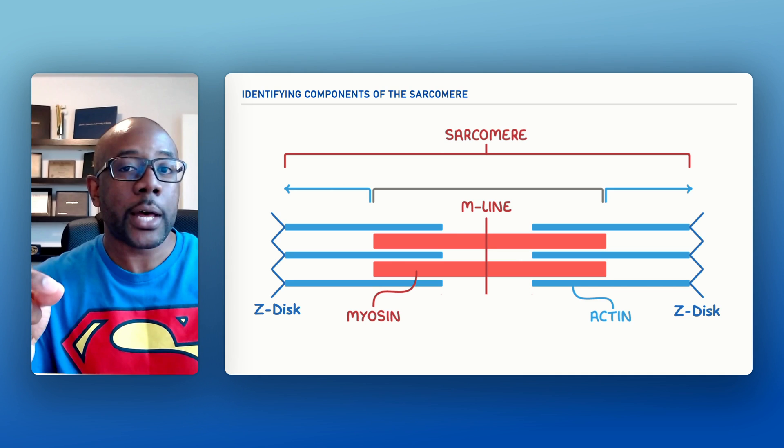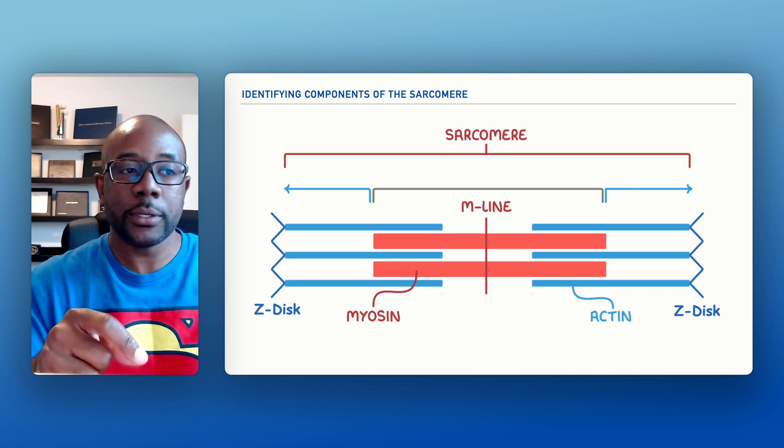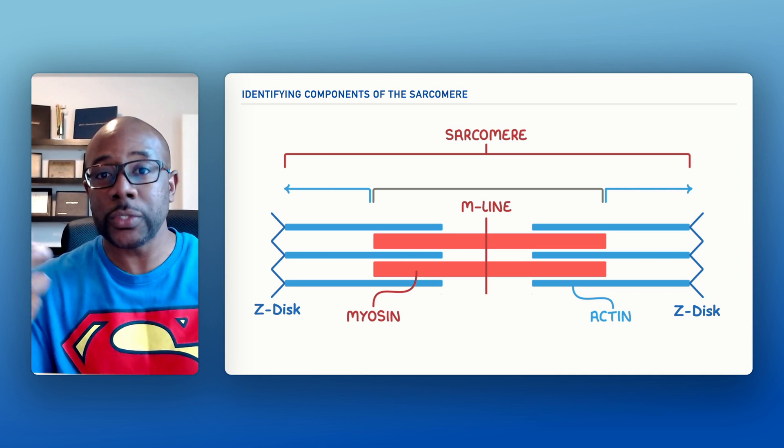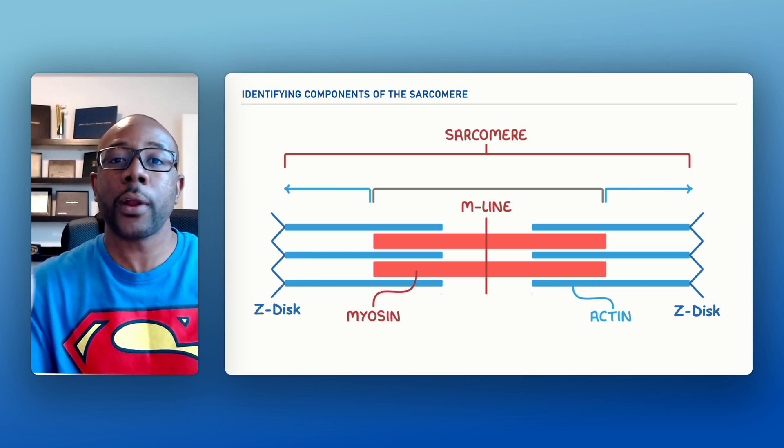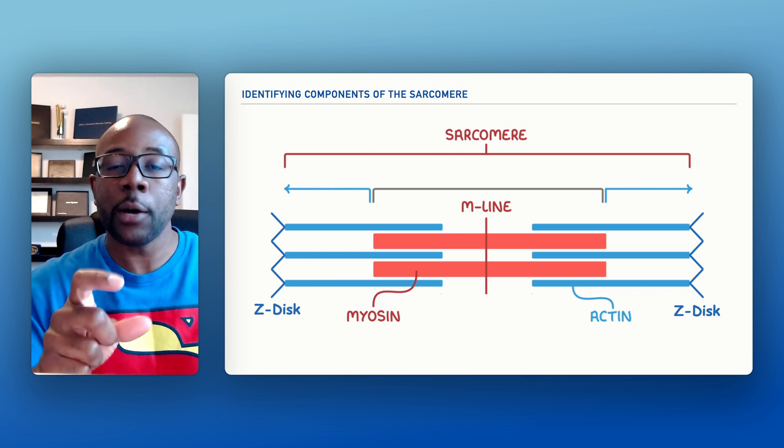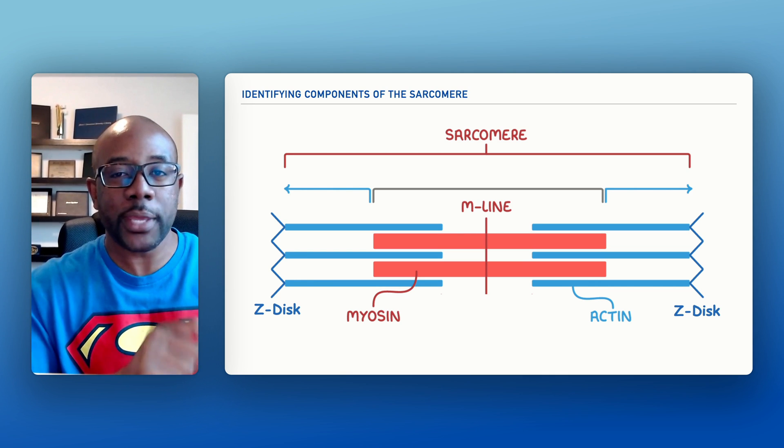So again, the M-line is the anchor for myosin, and the Z-disc or Z-line is the anchor for actin. All right, so let's look at a couple of more regions, and we'll be out of here.